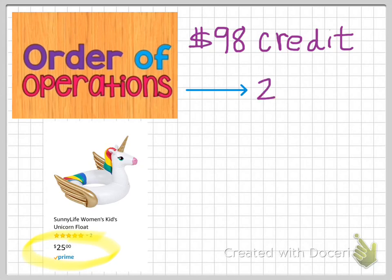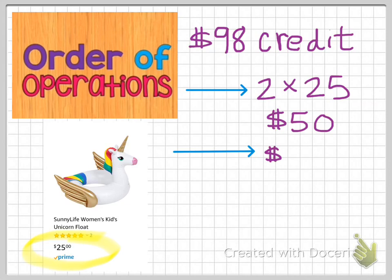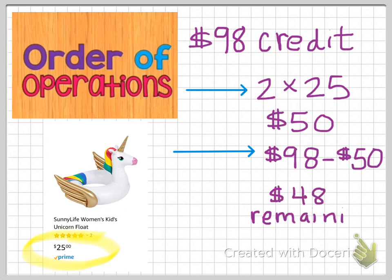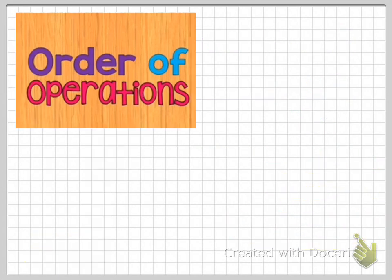The first thing we can all agree on is that I'm going to buy two of these pool floats, so at $25 each I'm going to be spending $50. I have that wonderful $98 credit in my Amazon account, so if I subtract the $50 I'm spending on pool floats from the $98, I will have $48 remaining in my Amazon credit. Next time I want to go shopping, I will have $48 to spend.